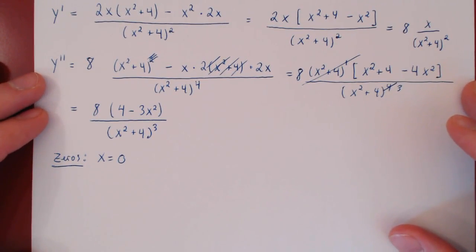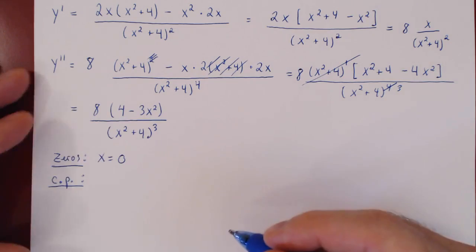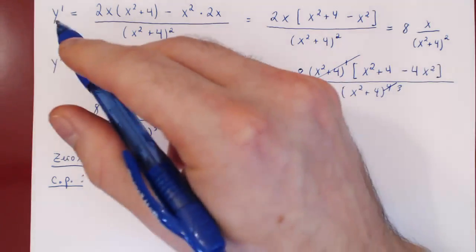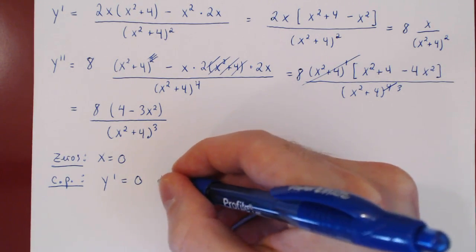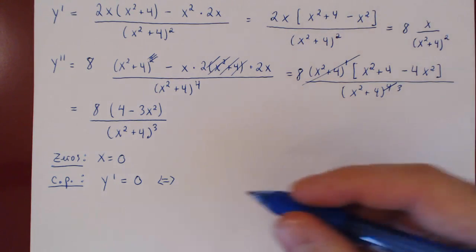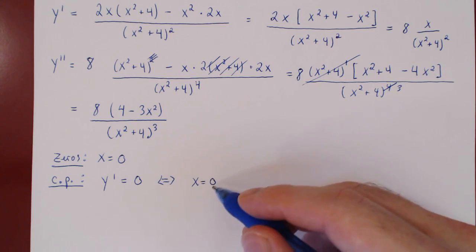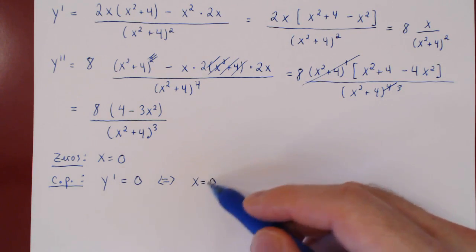So we jump to our critical points. Critical points are points where the derivative is zero or undefined. Since x squared plus 4 is never zero, we will never have division by zero, so y-prime will never be undefined. We have to solve for the derivative being equal to zero. Again, the derivative is a fraction, so it can only be zero if the numerator is zero — therefore if x equals zero. So we have a unique critical point x equals zero, where the function is flat.